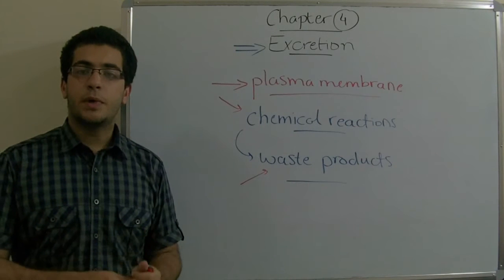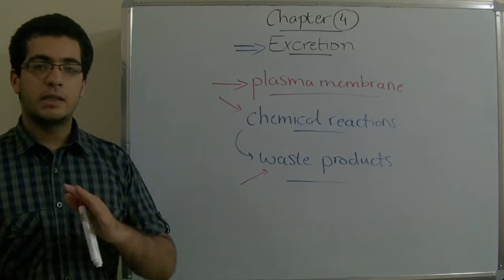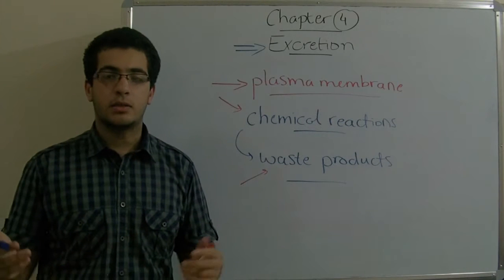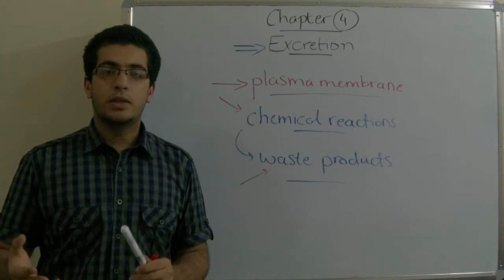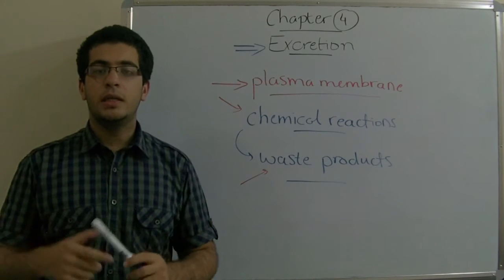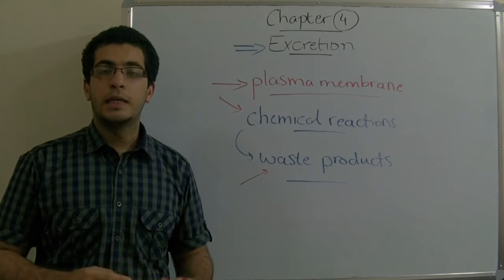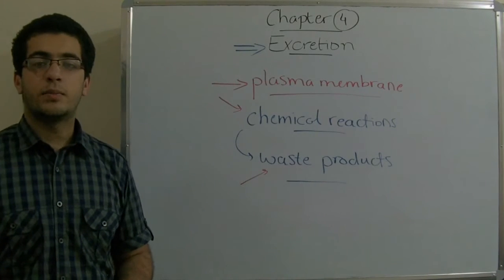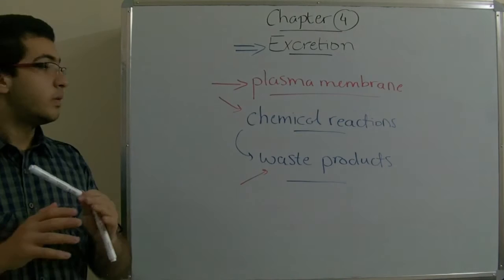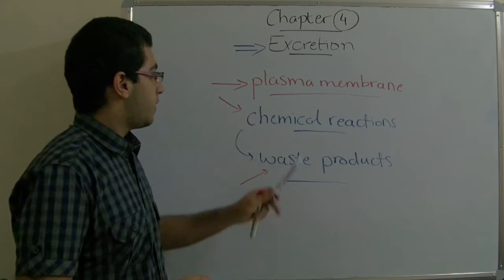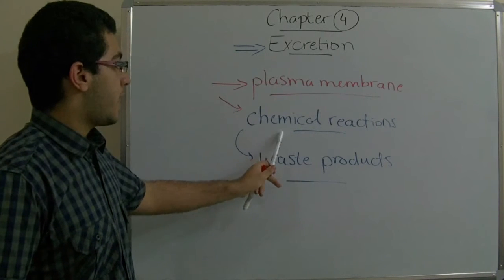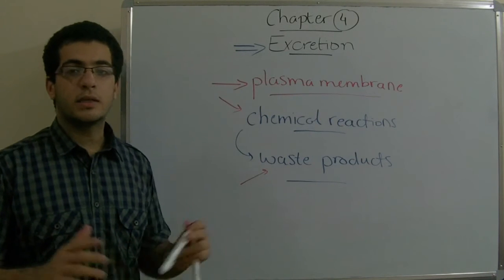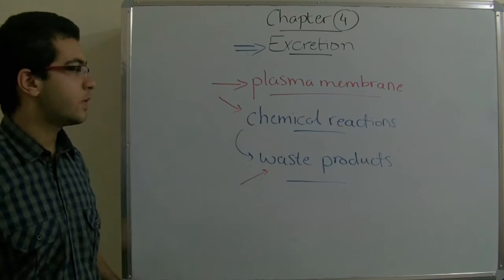For example, when we respire air, the air contains oxygen, carbon dioxide, and other gases such as nitrogen. This nitrogen goes from outside, inside the body, then goes outside again in the exhalation process. This nitrogen doesn't pass through any chemical reaction, so expelling this nitrogen outside the body is not considered an excretion process.